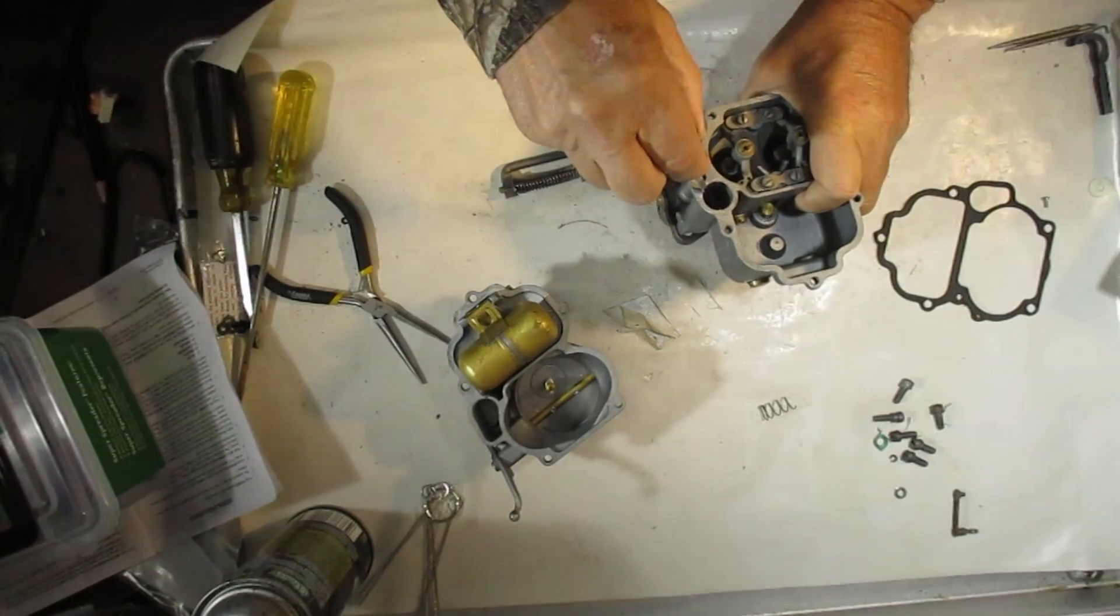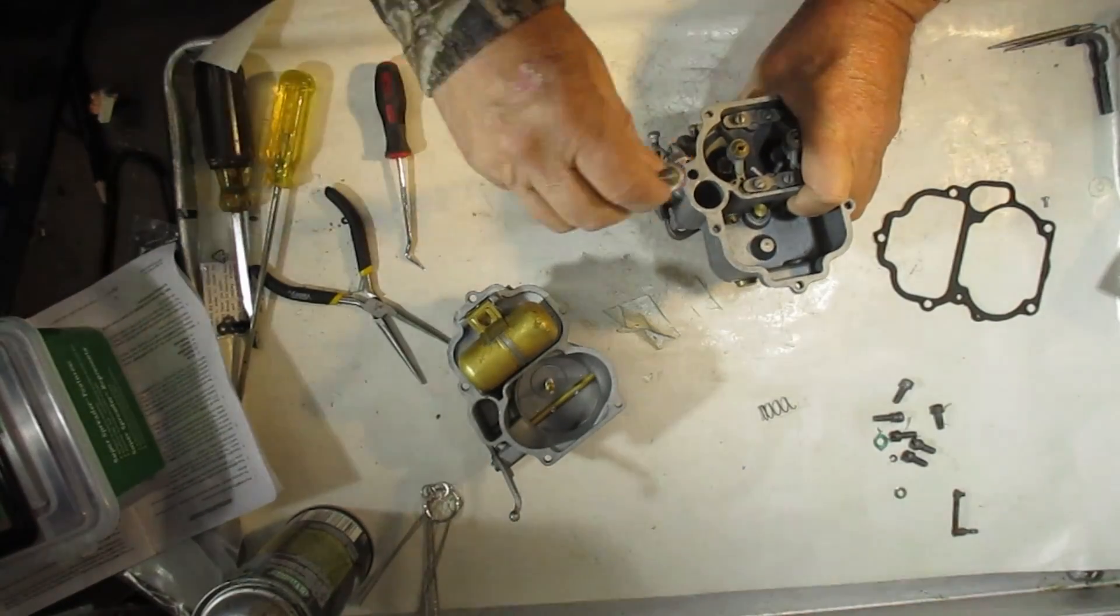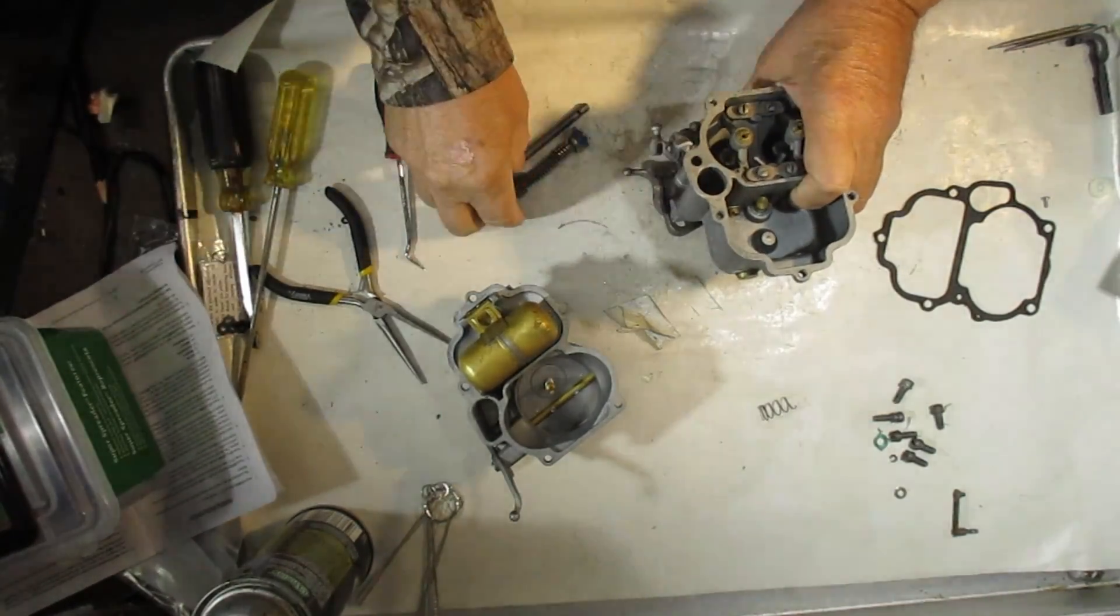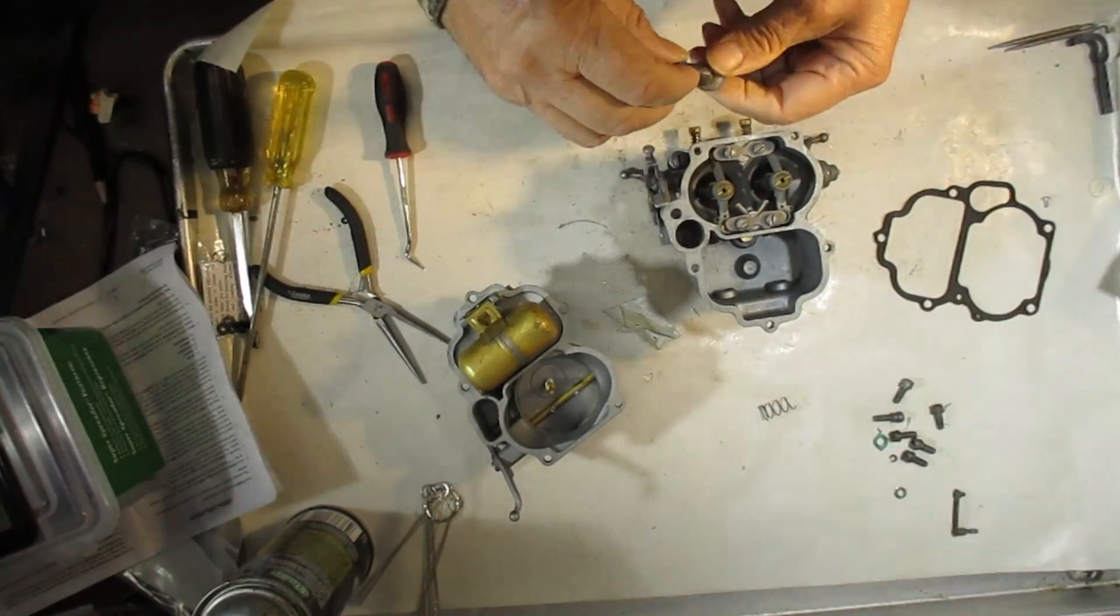There's a check ball down there with a little retainer on it, and the weight of the fuel and the suction of this coming up will pull gas through that passage and into the well here and fill it up.